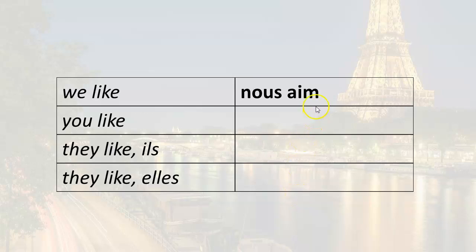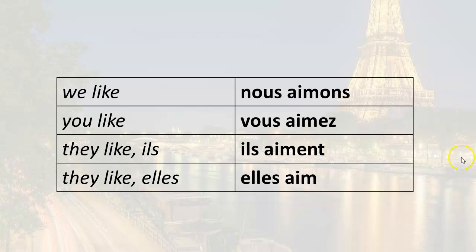We like. Remember to add your ending to the root. This is the root. When you take off the ER, you have the root. So the ending for nous is ONS. Nous aimons. You like. Vous aimez. E, Z. They like. Ils aiment. E, N, T. They like. Elles aiment. E, N, T.